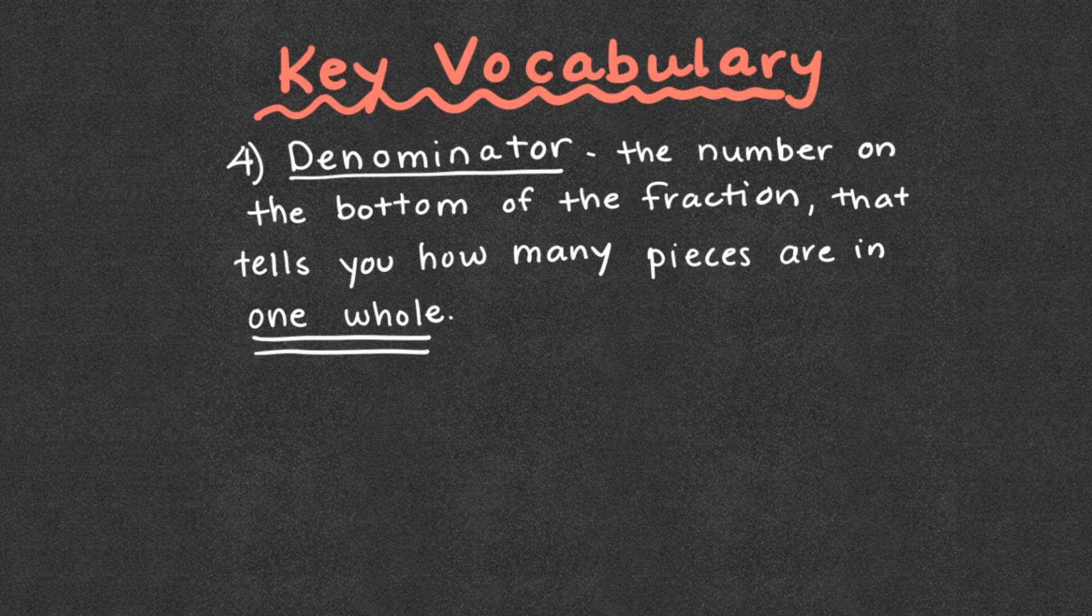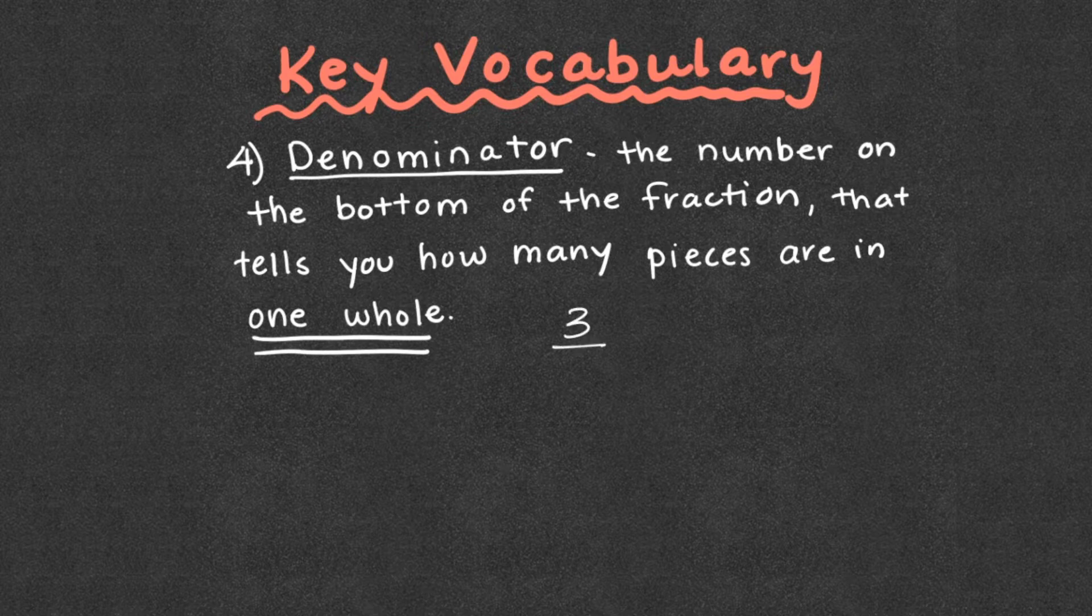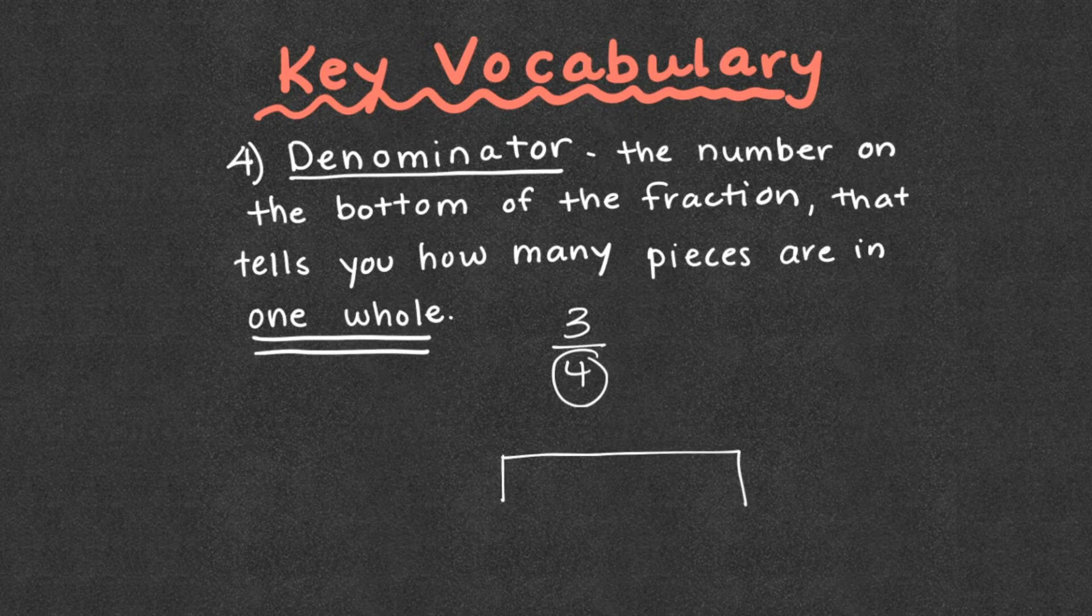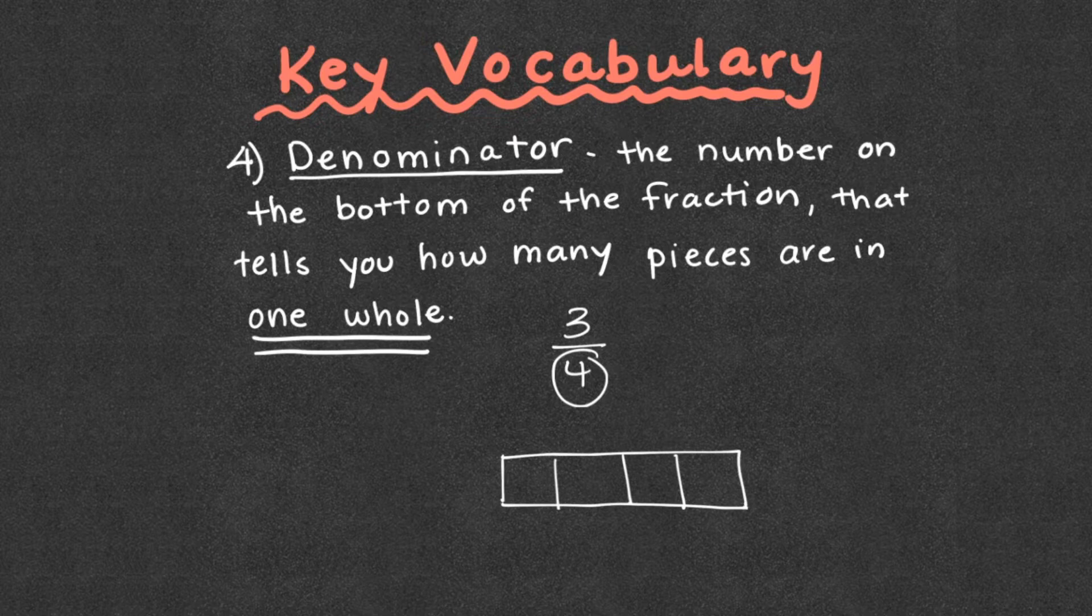The denominator, the number on the bottom of the fraction that tells you how many pieces are in one whole. So again, if we looked at 3 fourths, 4 is our denominator. So if we had one whole, we know that in that whole, there would be 4 parts, 4 pieces.